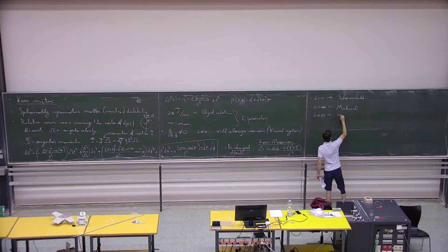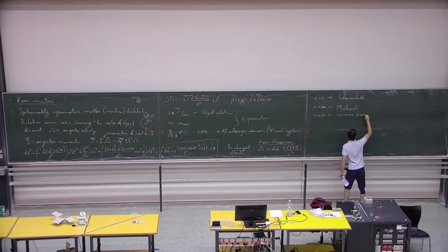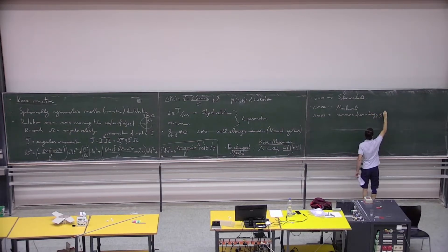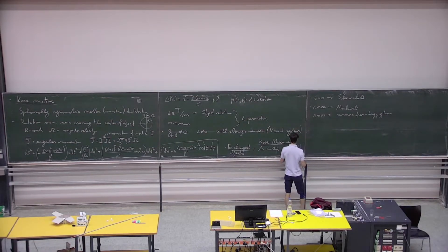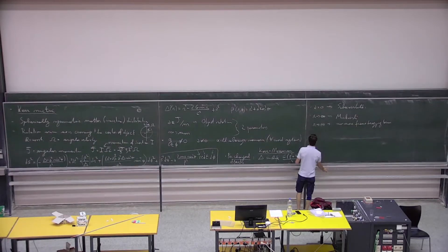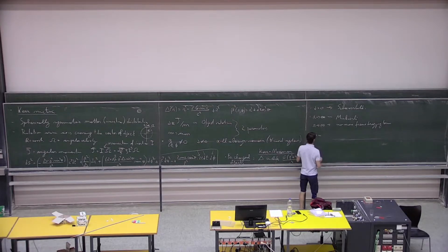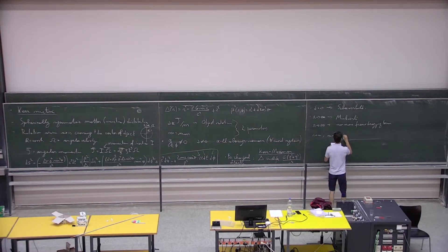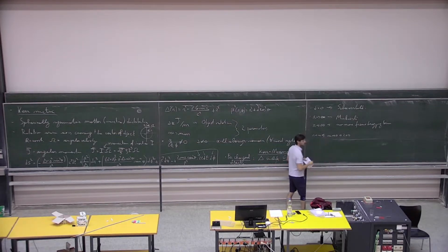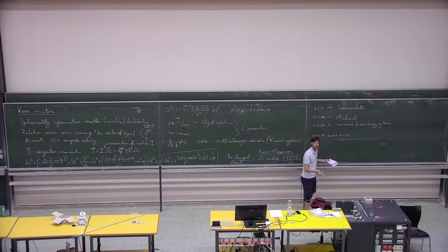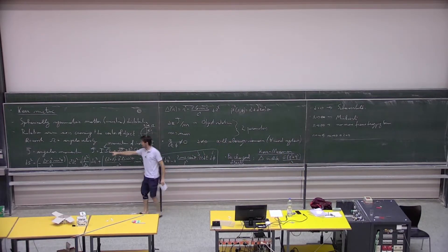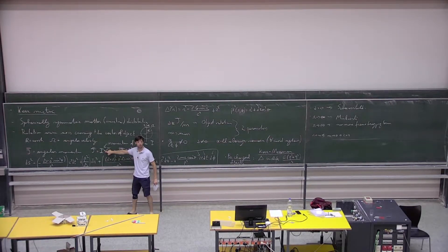In all of those cases — r going to infinity, M going to zero, or A equal to zero — frame dragging disappears. If it's not rotating, frame dragging is not there anymore. If the mass goes to zero, the angular momentum associated to the moment of inertia goes to zero, and therefore also the contribution of the rotation of the object goes to zero.